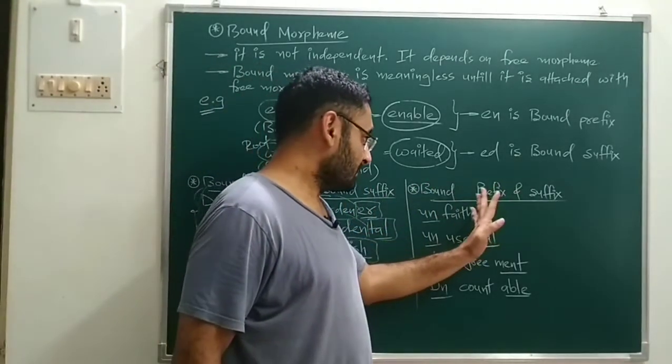Bound morphemes are not independent — they require some word so that their meaning is expressed. They depend on a free morpheme. A bound morpheme cannot come alone; it doesn't have its own meaning. To find the meaning of a bound morpheme, you require one free morpheme. A bound morpheme is meaningless until it is attached with a free morpheme.